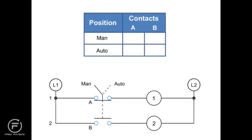Thus, if the selector switch is in the MAN position, A is X, or closed, and B is O, or open. When the switch position is set to AUTO, A is O, or open, and B is X, or closed.